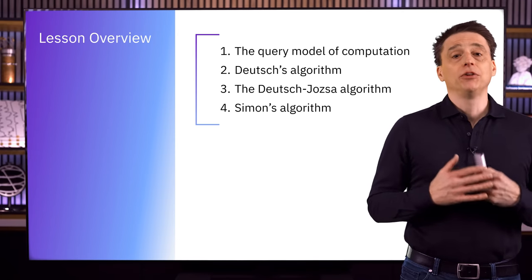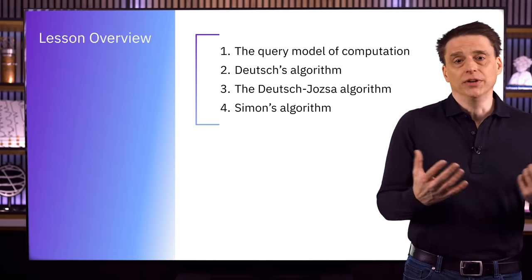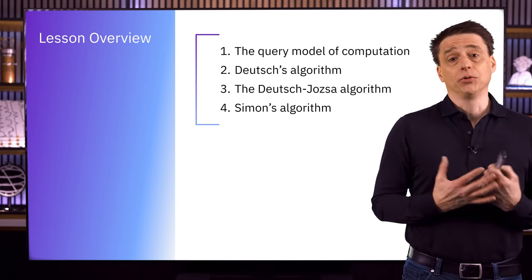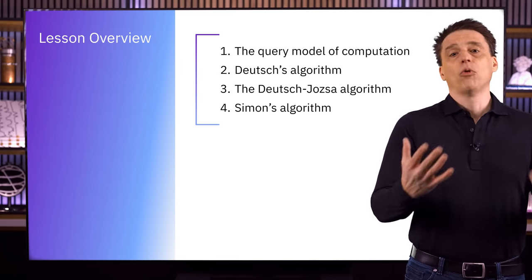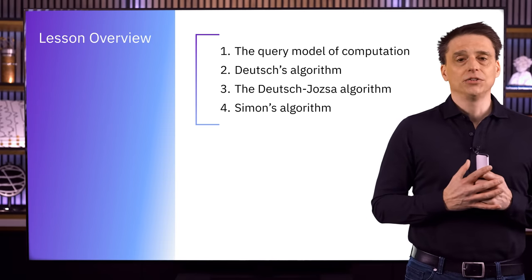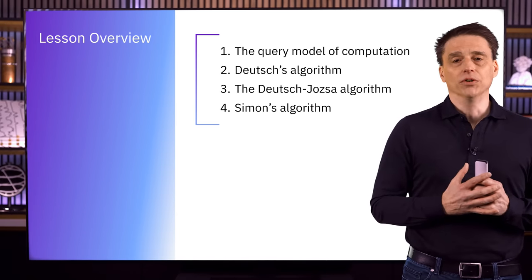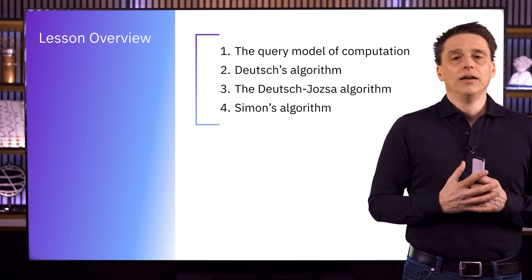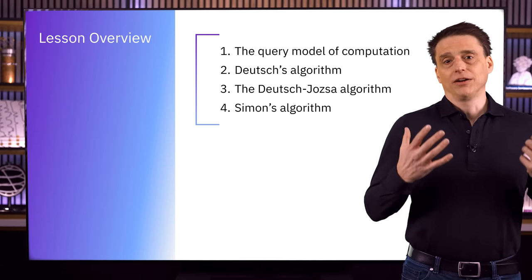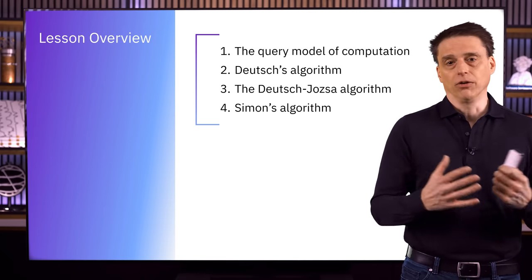Here's an overview for the lesson, which is about a specific model of computation known as the query model. You can think of this model as being kind of like a petri dish for developing algorithmic ideas, both quantum and classical. It's not meant to be a practical model describing real-life computational problems. The query model is a simple model that allows us to explore the potential of quantum computers without a lot of technical details getting in the way, and it isolates important ideas behind quantum computing. Quantum computing first developed within this model, and the ideas developed within it directly inspired important quantum algorithms such as Shor's algorithm for factoring.